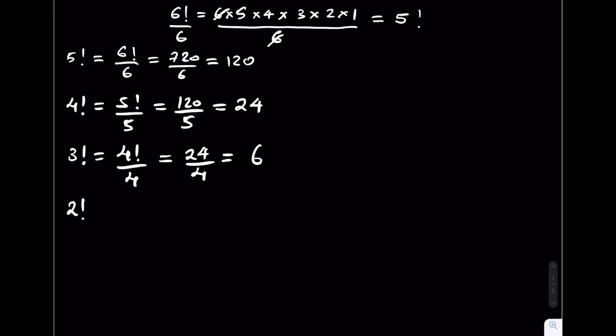2 factorial is given by 3 factorial over 3 which is equivalent to 6 over 3. This is equal to 2.